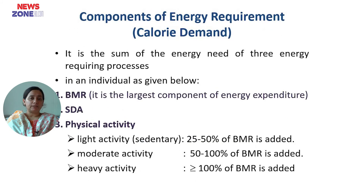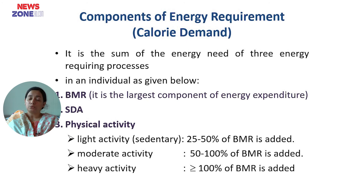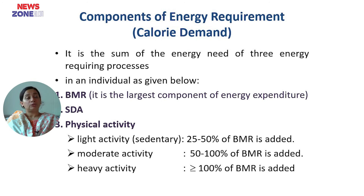The components of energy requirement — or caloric demand — is the sum of three energy-requiring processes: basal metabolic rate, specific dynamic action of food, and physical activity. For light or sedentary activity, 25 to 50% of BMR is added. For moderate activity, 50 to 100% of BMR is added. For heavy work, greater than 100% of BMR is added.